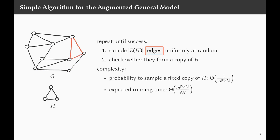What is the complexity of this algorithm? The probability to sample a fixed copy of H is roughly 1 over M to the number of edges in H, because we are sampling that many edges and each specific edge has probability 1 over M. So the probability to sample a fixed copy of H is 1 over M to the number of edges we sample. Since the success probability gives a geometric series, the expected running time is M to the number of edges in H, divided by the number of copies of H in G.